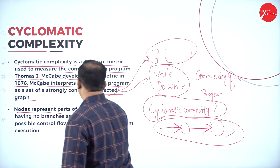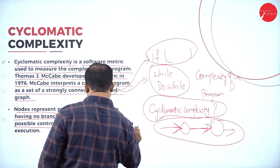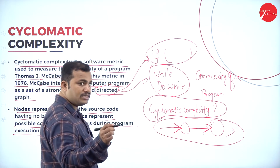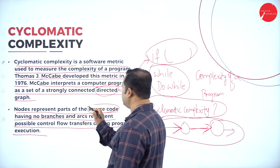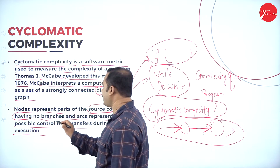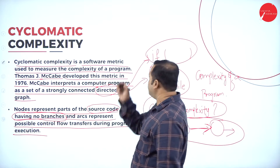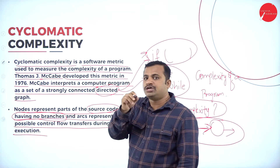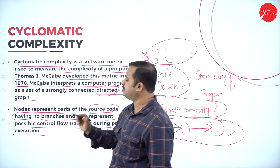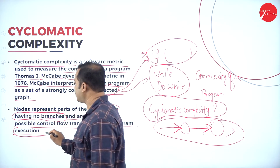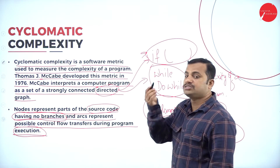Nodes represent parts of the source code having no branches, and arcs represent the possible control flow transfers during program execution. The source code here refers to the program wherein there are no branches at all — that means sequential execution of statements. If there is any branching statement like an if condition, the control jumps to the if block or the else block based upon the condition satisfied.